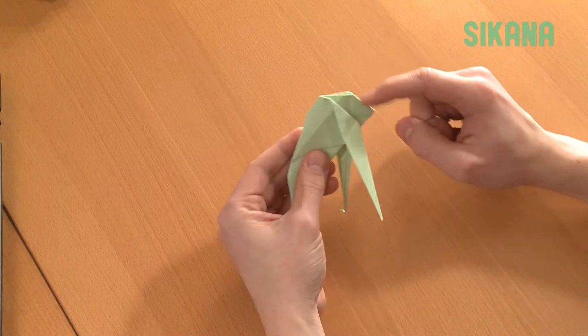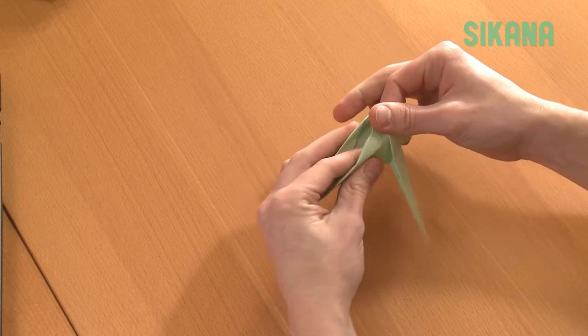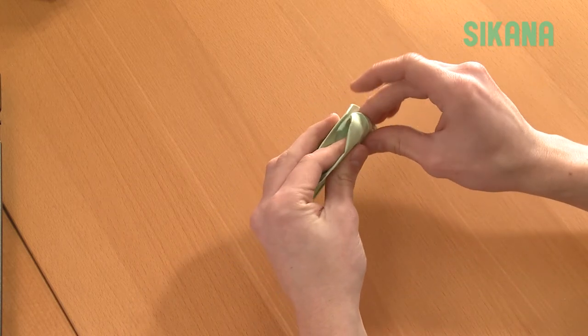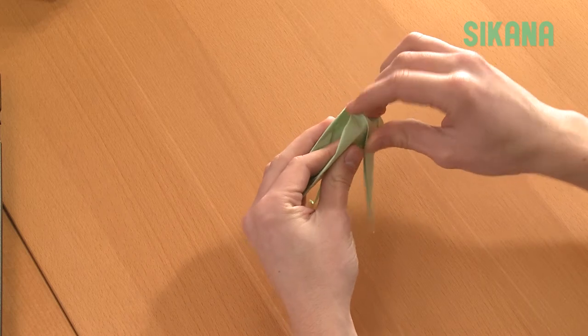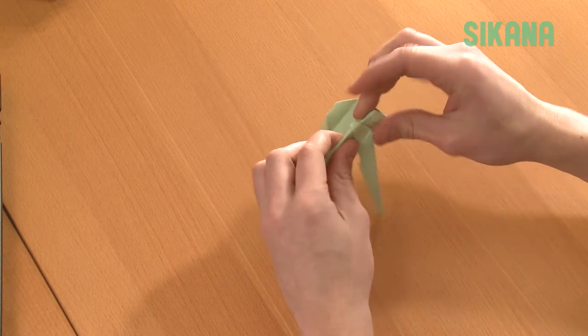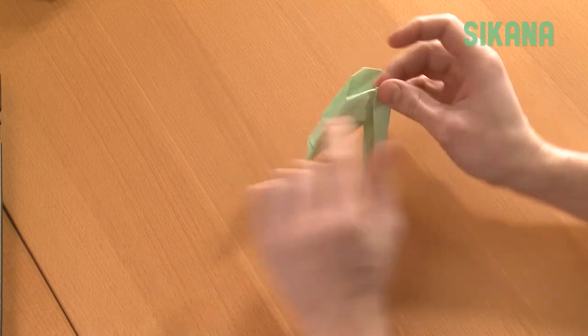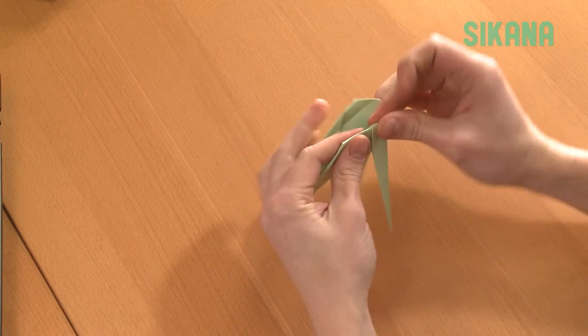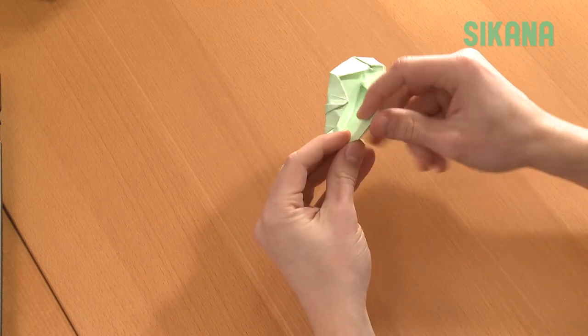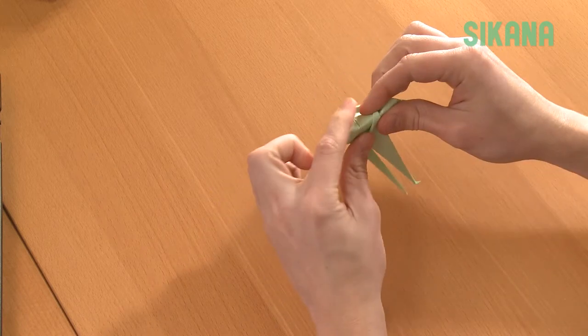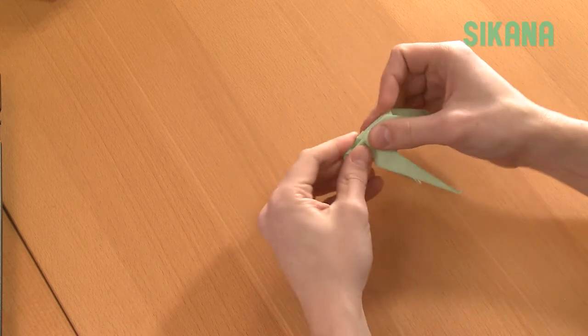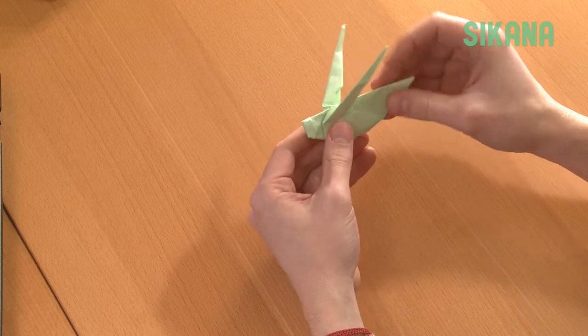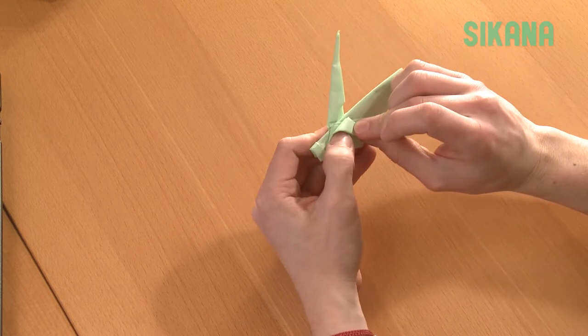Now, fold these points inward like this. It's important to still have a peak at this level. Fold the legs down alongside this part.